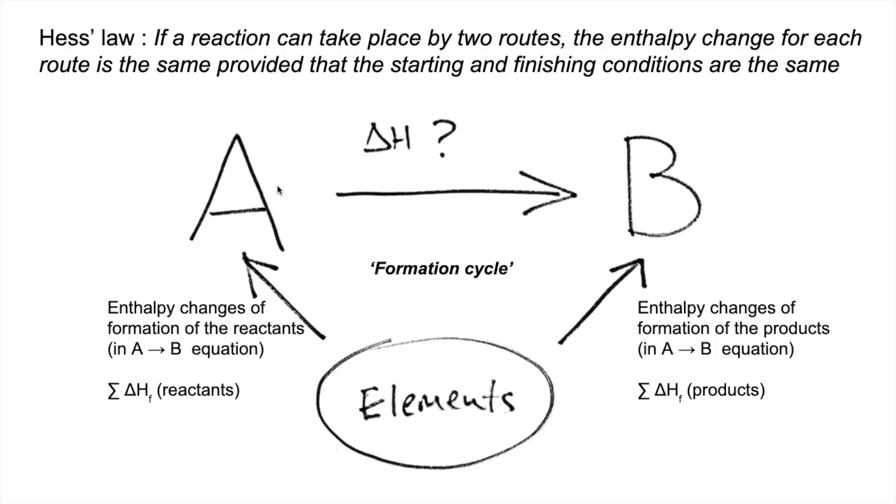So the two routes: we can start from A and go to B directly across the top, that's the unknown enthalpy change, or we could go through this way here, we'll call it the blue route. You can see from the arrow directions, this arrow here is going in the correct direction for the blue route, but this arrow here is going in the wrong direction. So we essentially just need to flip that around, and we do that by subtracting it.